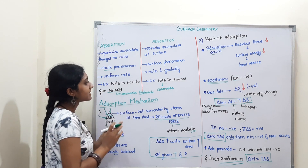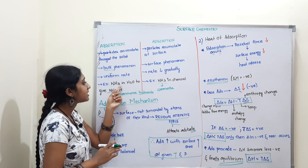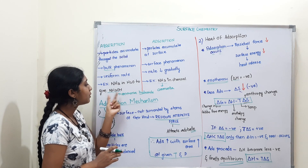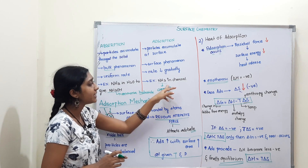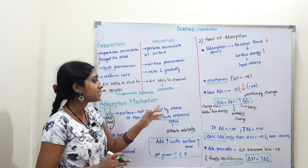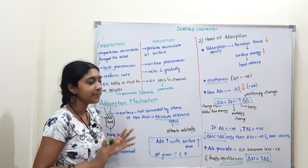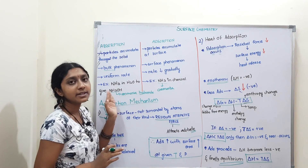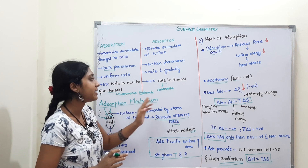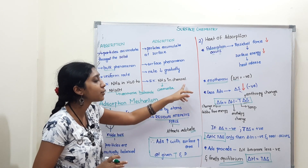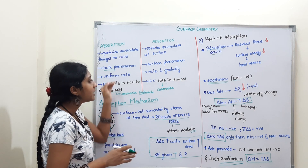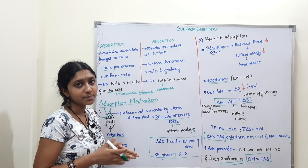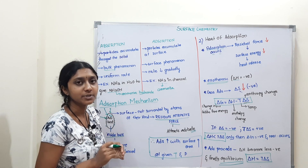Here is an example: NH3 dissolved in water gives NH4OH — that is absorption. NH3 adsorbed onto charcoal — that is adsorption. NH3 is ammonia, and ammonium hydroxide forms in water. These are the 4 points of difference between absorption and adsorption.